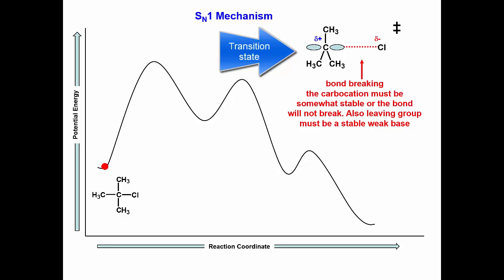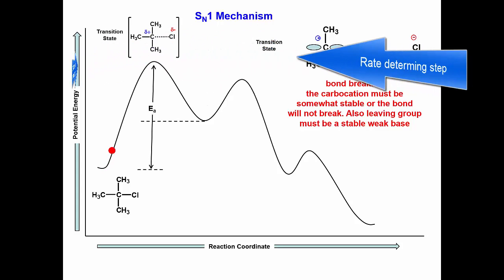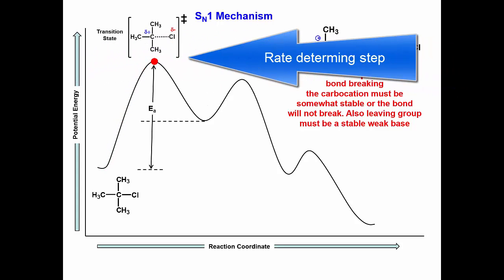If there is enough energy in the system, the bond will break to form a carbocation intermediate plus the leaving group. In fact, it has the largest activation energy in the entire mechanism and thus is the slowest step in this reaction. Since it is the slowest step, it determines the overall rate of reaction.